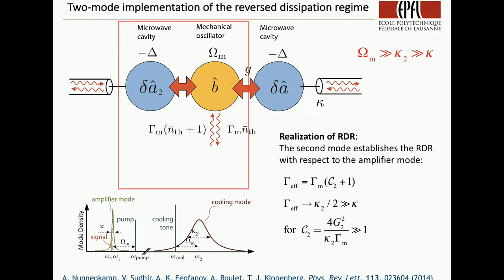It looks like this: we have the white mode, we apply a cooling tone, we cool mechanical motion, then we apply, say, a blue pump around the main mode and see amplification ideally. In principle, our effective damping rate of mechanics can be described like this, where C_2 is the cooperativity of the second mode. Staying in the linear regime, you can make gamma_effective almost kappa_2 over 2, so it should be much larger than kappa. In principle, it's possible to realize.